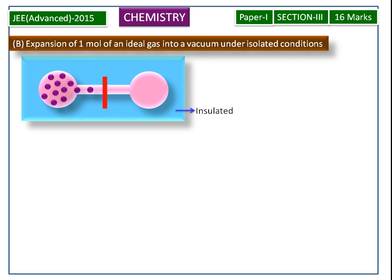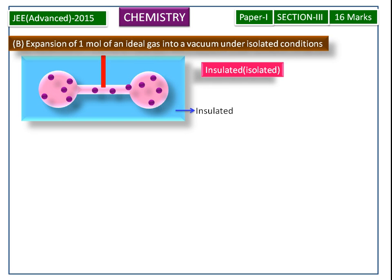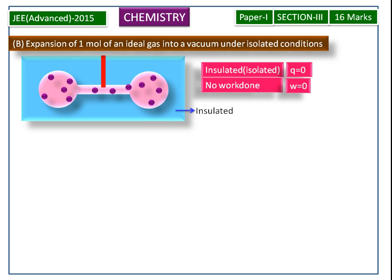Now we see the results. When we open the valve, the gas molecules move into the vacuum container until equilibrium is reached, after which they will not move. Because of this isolated system, Q is equal to 0 and no work is done, so W is equal to 0. According to the first law of thermodynamics, delta U is equal to 0.